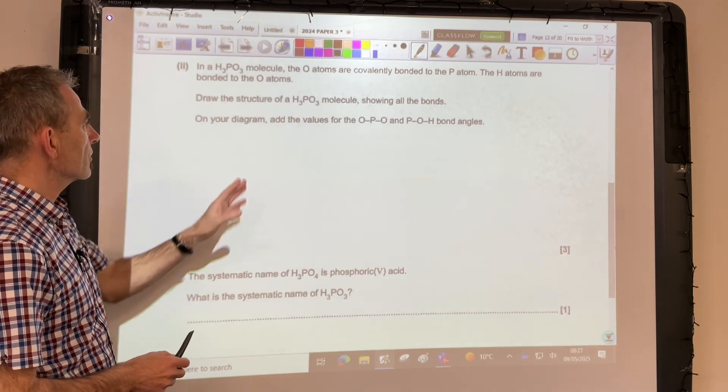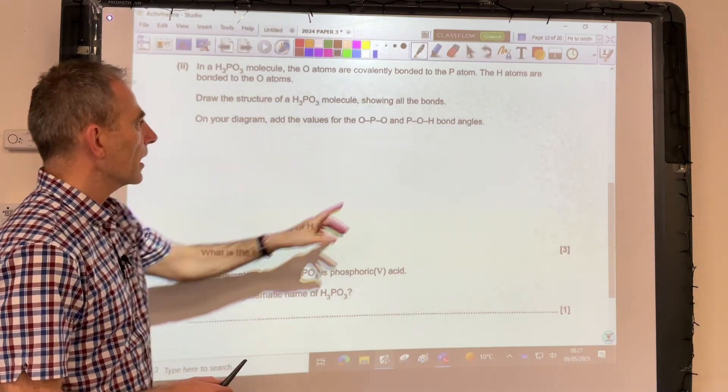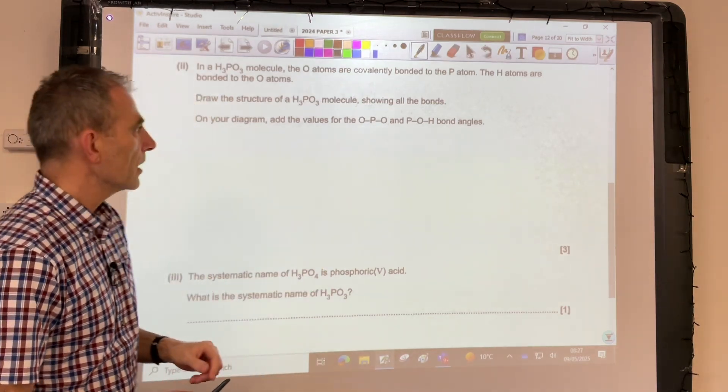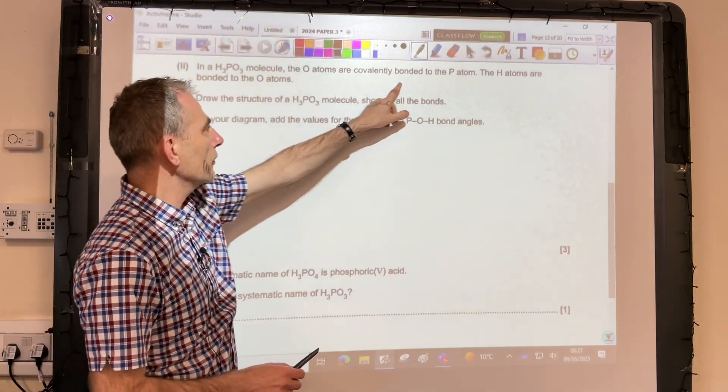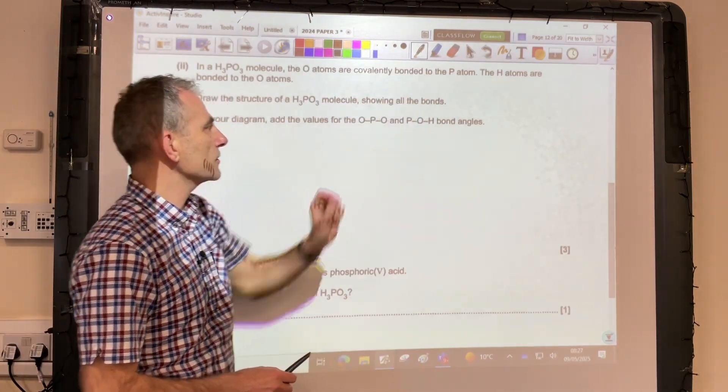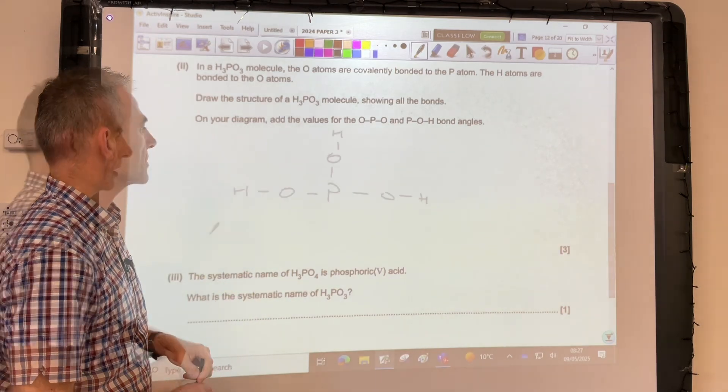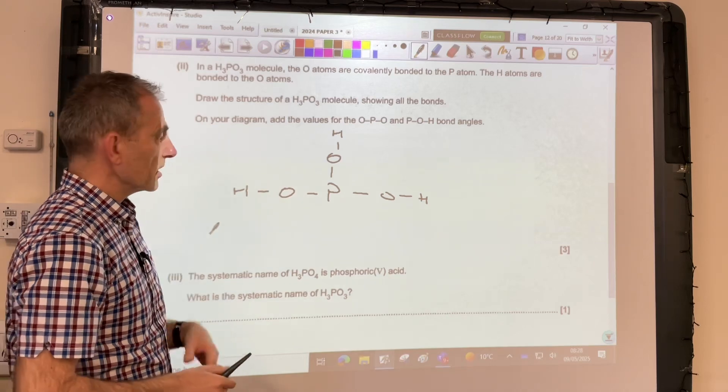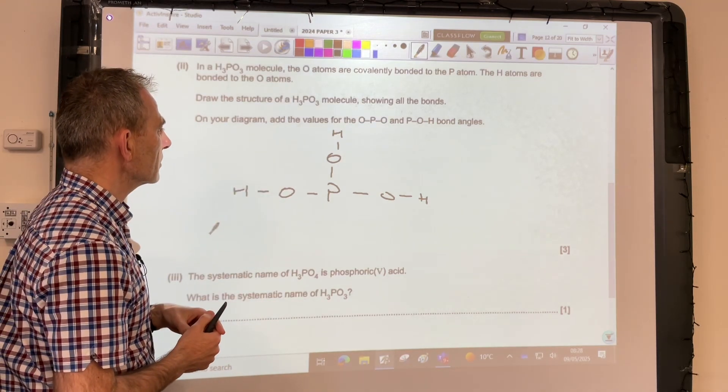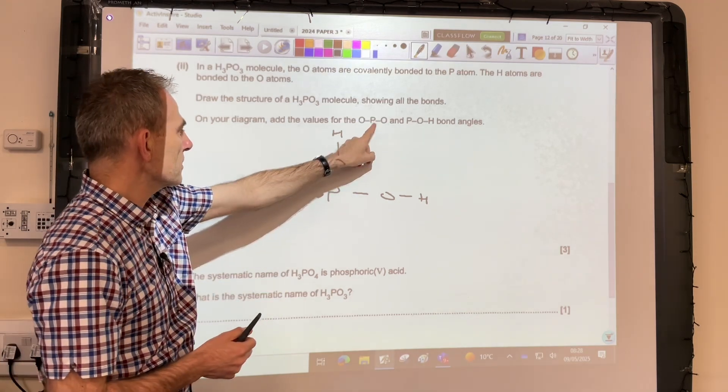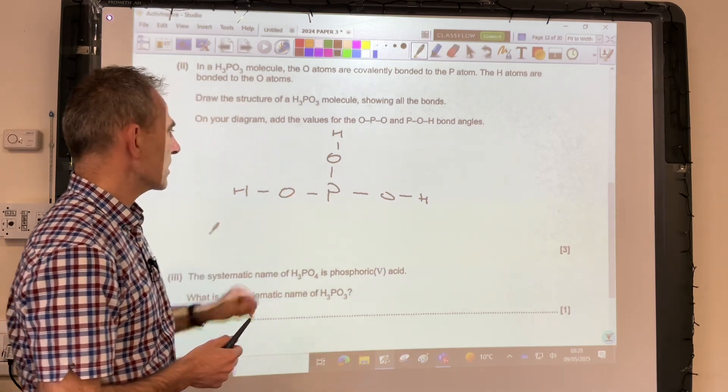Moving on to the next part, so we've got to draw the diagram for the H3PO3 molecule and then work out a couple of the bond angles. So we've got some information that the oxygen atoms are covalently bonded to that single phosphorus atom, and then the hydrogen atoms are bonded to those oxygen atoms. So a diagram like that is perfectly fine, it shows that information. So now let's think about the angles around the phosphorus, so this angle here, and around the oxygens, so these angles here.